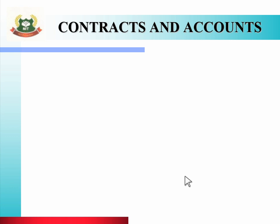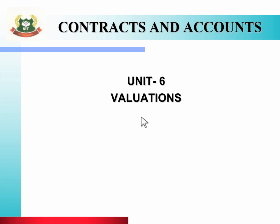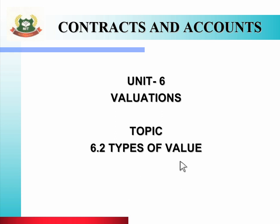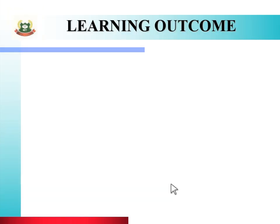In today's session, we will see Unit 6, that is Valuations, and today's topic is Types of Value. To study this topic, we will go through the learning outcomes, which include course outcome, program outcome, and unit outcome.